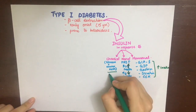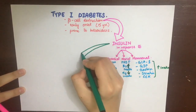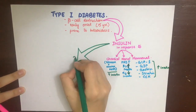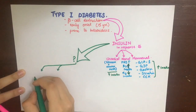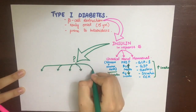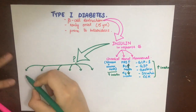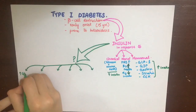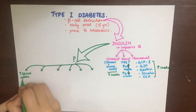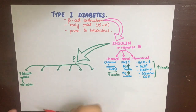Now that insulin has been released from the beta cells of the pancreas, let's look at some of its major metabolic effects. Firstly, it will increase glucose uptake and utilization in peripheral cells to lower blood glucose levels. Secondly, it will inhibit glycogenolysis — that is, glycogen breakdown — in the liver and muscle tissue.